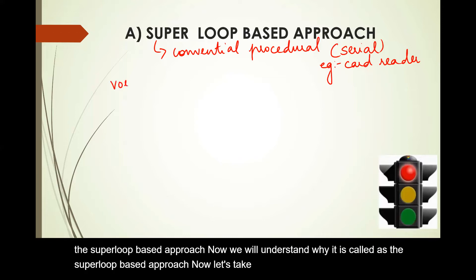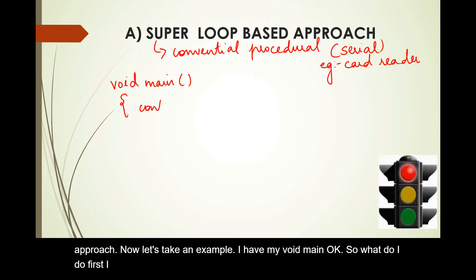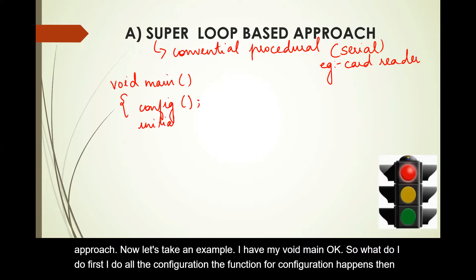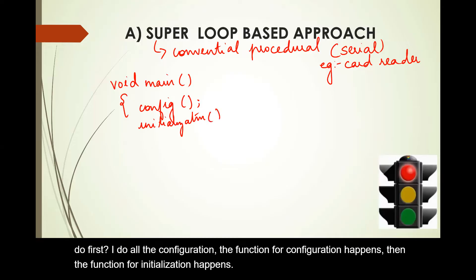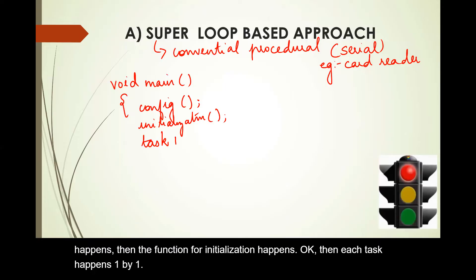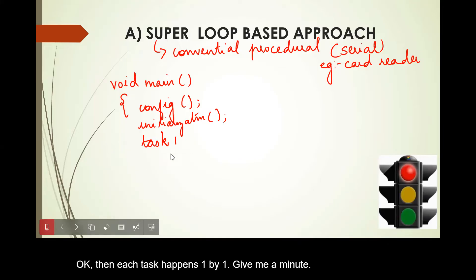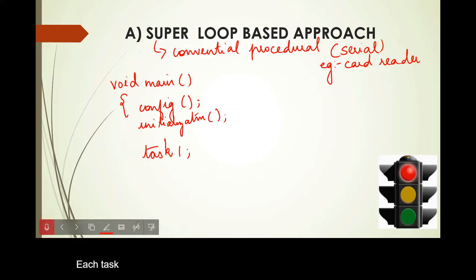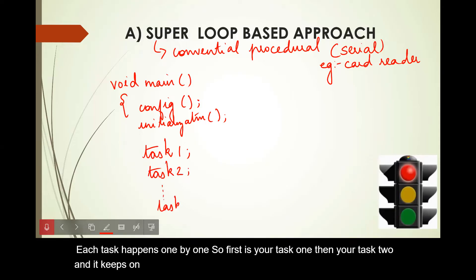Let's take an example. In void main, first I do all the configuration — the function for configuration happens. Then the function for initialization happens. Then each task happens one by one: first task one, then task two, and it keeps on repeating for the number of tasks.